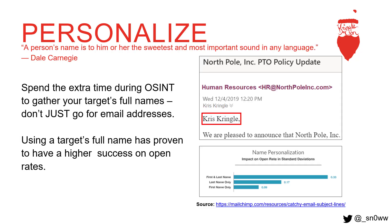People love hearing the sound of their own name, and using a full name in a phishing campaign can go a long way. Mailchimp did a study and when they used first and last name compared to just the last or just the first name, their emails got so many more opens — and I think that's extremely important. So my suggestion is spend the extra time during OSINT: don't just grab email addresses, make sure you're finding full names too and incorporating those in your phishing campaigns.